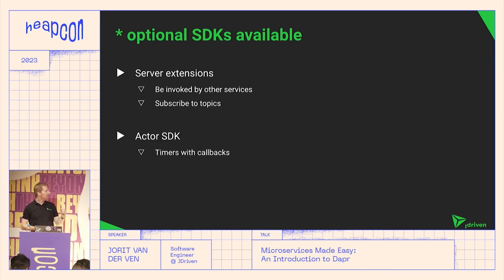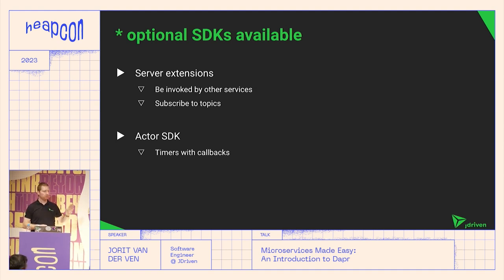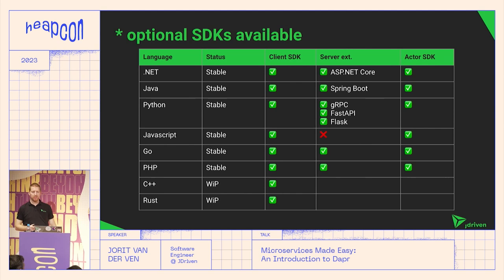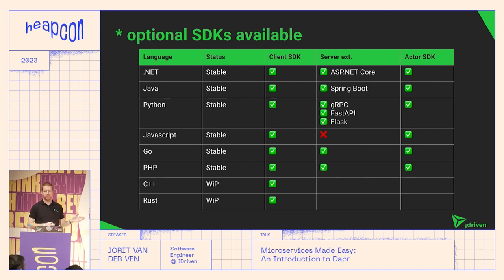There's a client SDK which helps you make synchronous calls — you request something and get something back. There's also a server extension available for certain languages which helps you to be invoked as a service, and there's an actor SDK. SDKs are available for pretty much all popular languages, and as I said, it's not required to use them — if you're using Ruby or something else, you can just call the API directly.